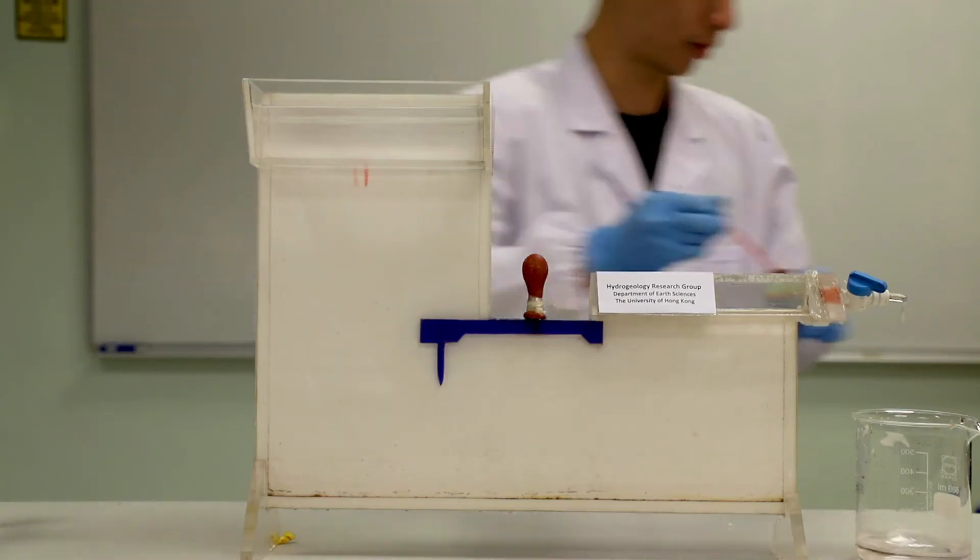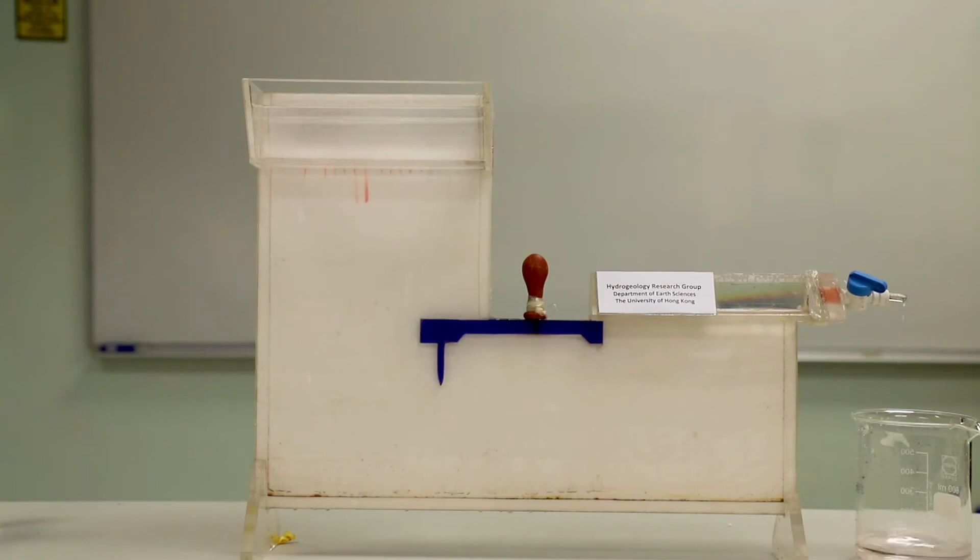This is a Healy-Shaw model that represents groundwater flow under a dam. A Healy-Shaw model is two plates with a small spacing between them that is filled with viscous liquid. Flow lines in a Healy-Shaw model follow the same principles as flow lines in a homogeneous porous medium such as sand.